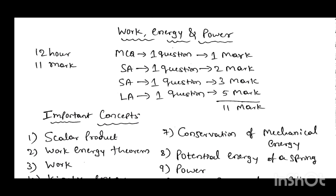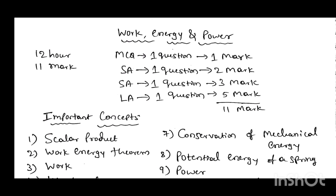Next I will consider the chapter Work Energy and Power. From this chapter the allotted hours is 12 hours and the allotted marks for your annual exam is 11 marks. This 11 marks is distributed as follows: one MCQ question carrying one mark, one essay type question for two marks, one essay type question for three marks, and one long answer derivation type for five marks. Now I will go through the important concepts from this chapter.